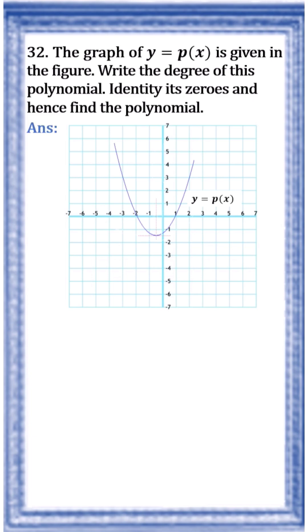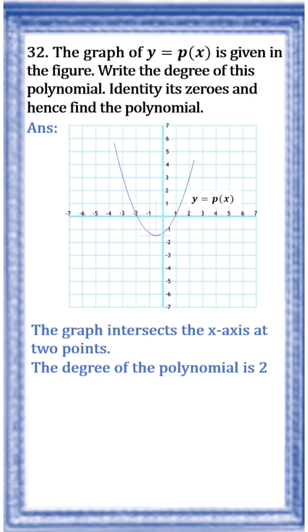Now we have the graph intercepts the x-axis at two points. One is this one, another one is this one. So, the degree of the polynomial is 2.